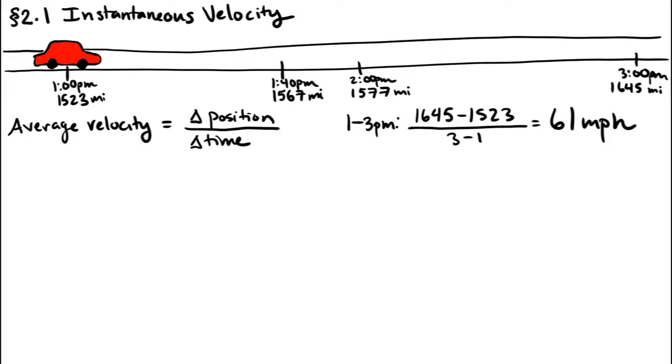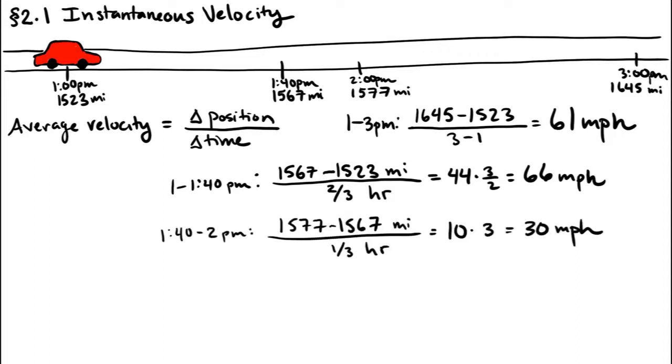From 1 o'clock to 1:40, in that two-thirds of an hour, you were traveling an average of 66 miles per hour. From 1:40 to 2 o'clock you only went 10 miles, which means that in that one-third of an hour your average speed was just 30 miles per hour.